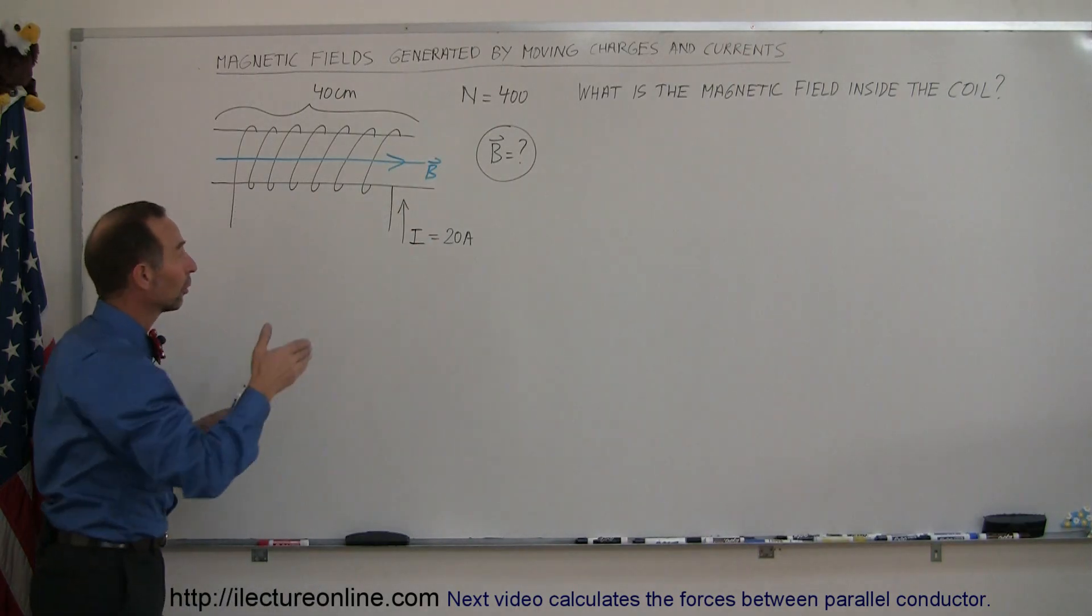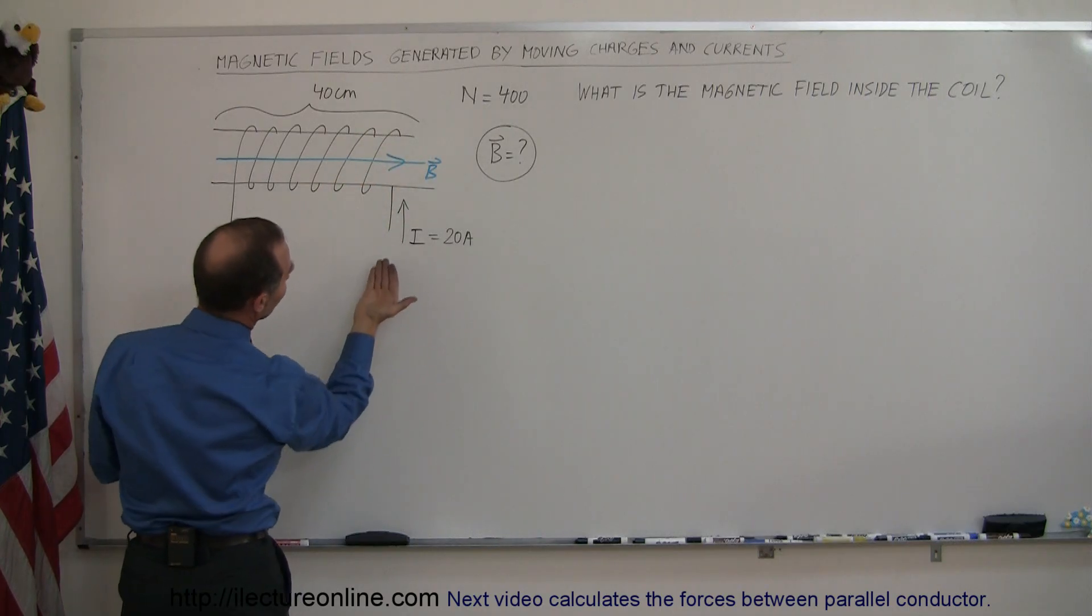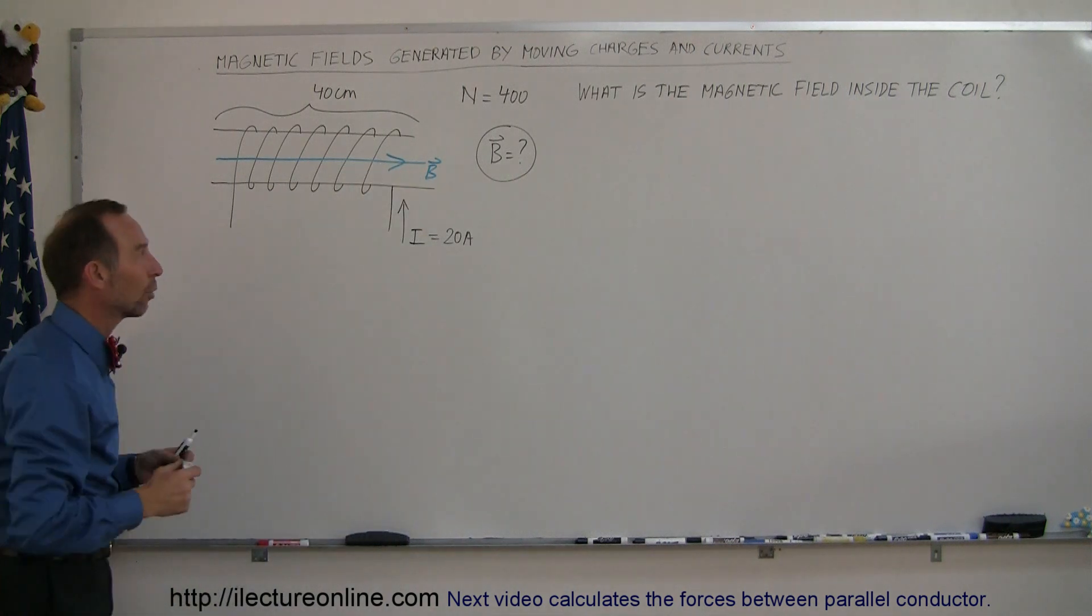Again, notice that the current goes behind, up, over and in front like this. So curl your fingers in the direction of the current, your thumb will be pointing in the direction of the magnetic field inside that coil.